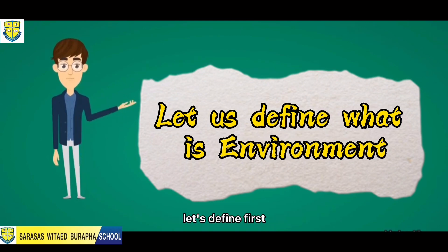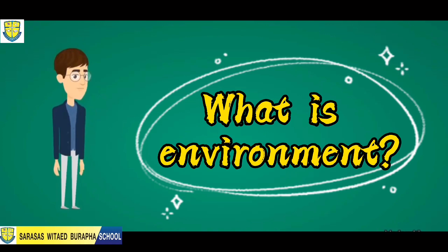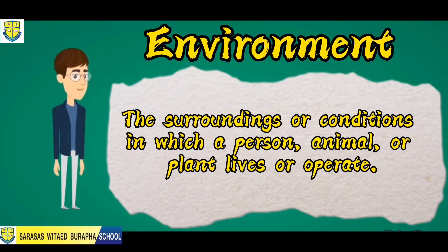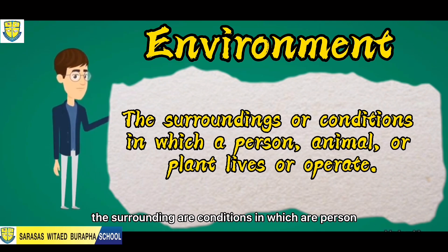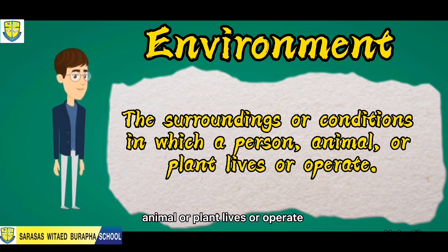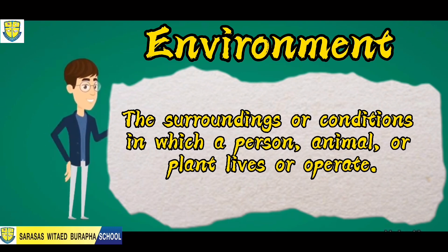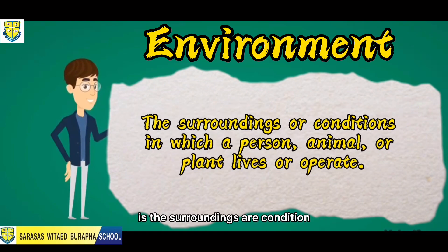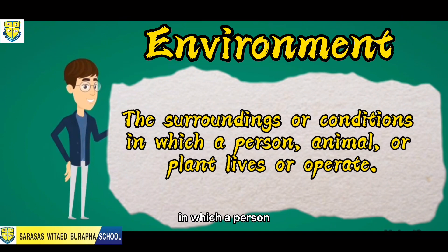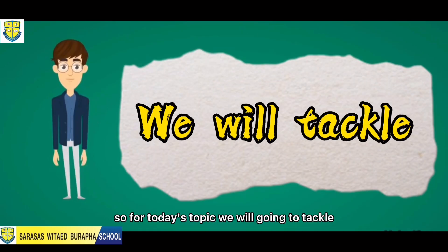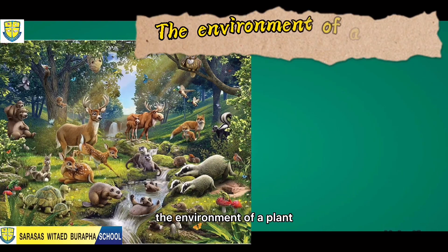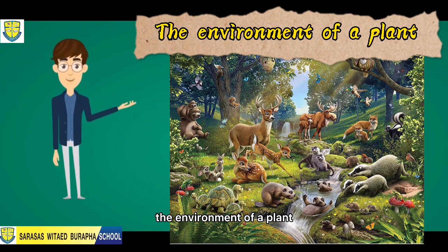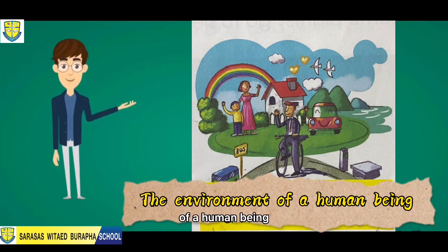For us to understand our topic, let's define first what is environment. Environment is the surroundings or conditions in which a person, animal, or plant lives or operates. For today's topic, we will tackle the environment of a plant and the environment of a human being.